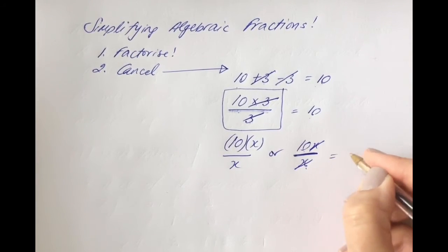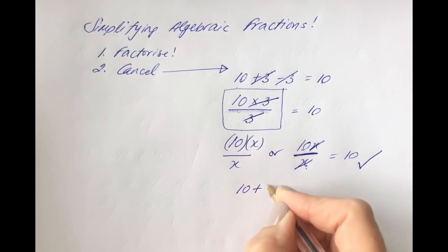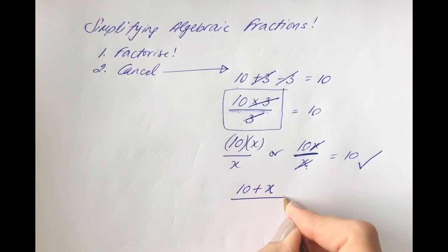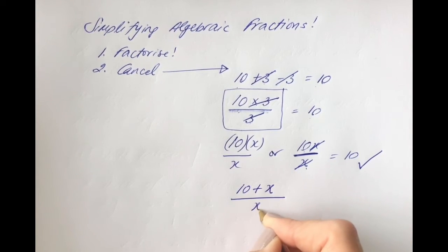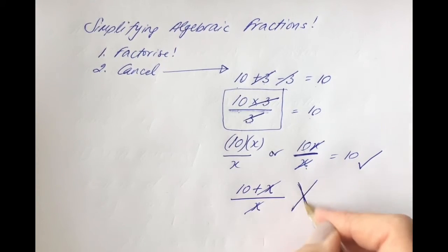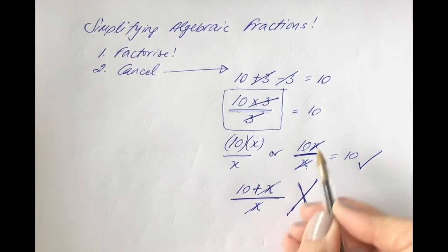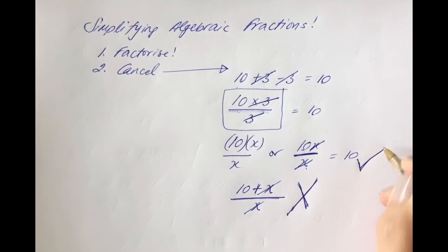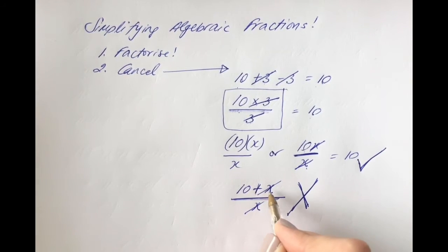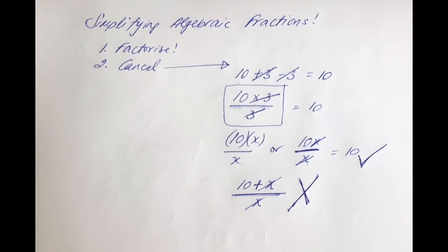However, if you had (10 + x) on the top and x on the bottom, you could not cancel those x's. That x is being added, and division does not cancel out addition — division will only cancel out multiplication. So ask yourself the question: